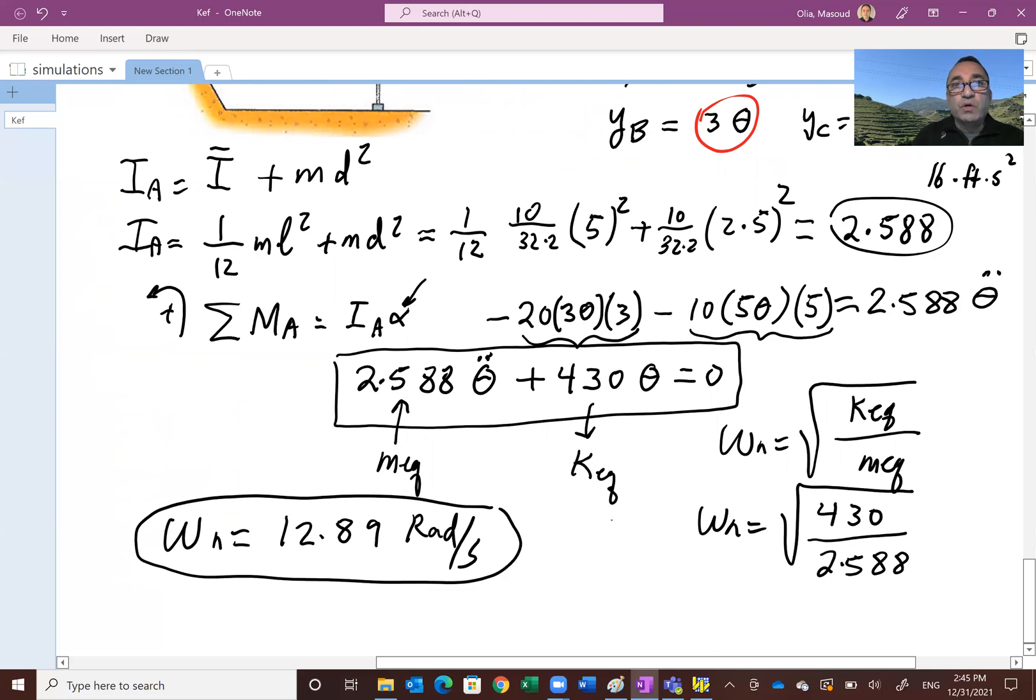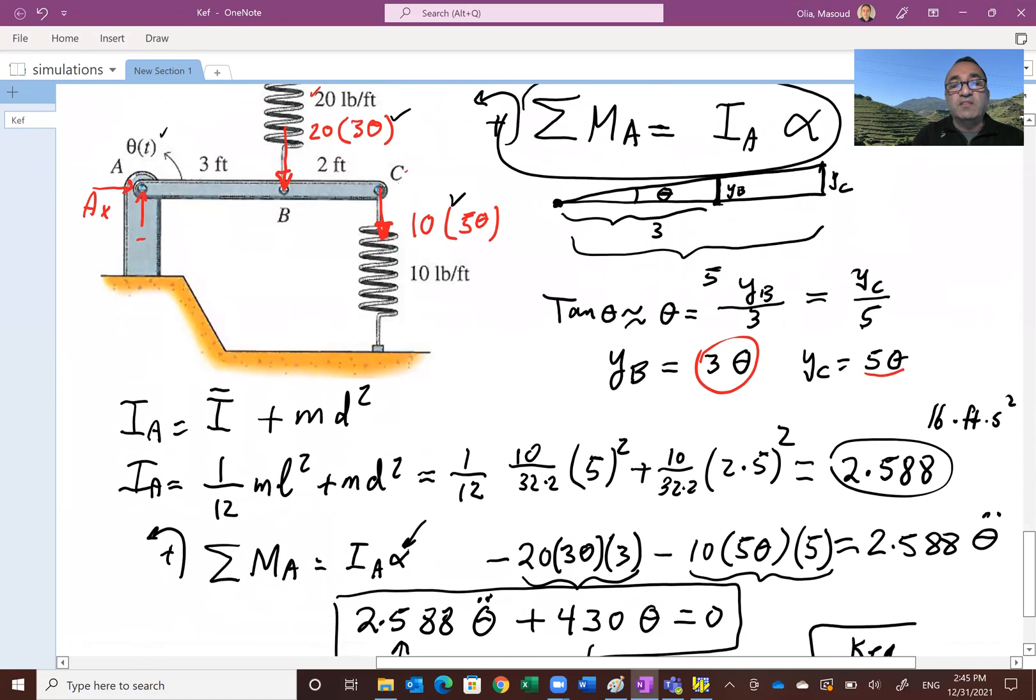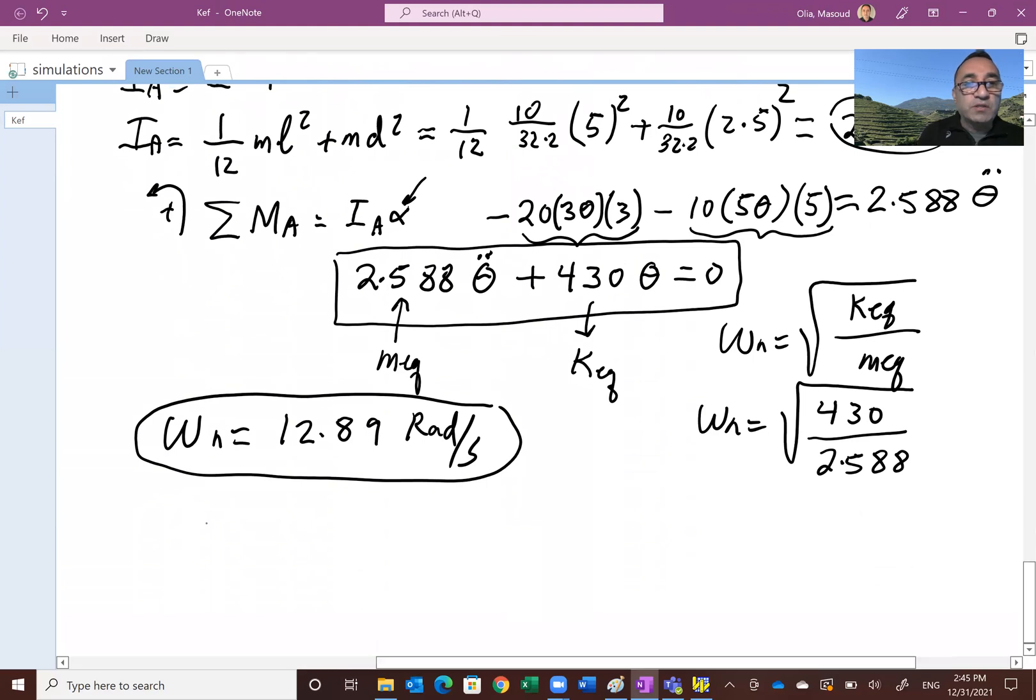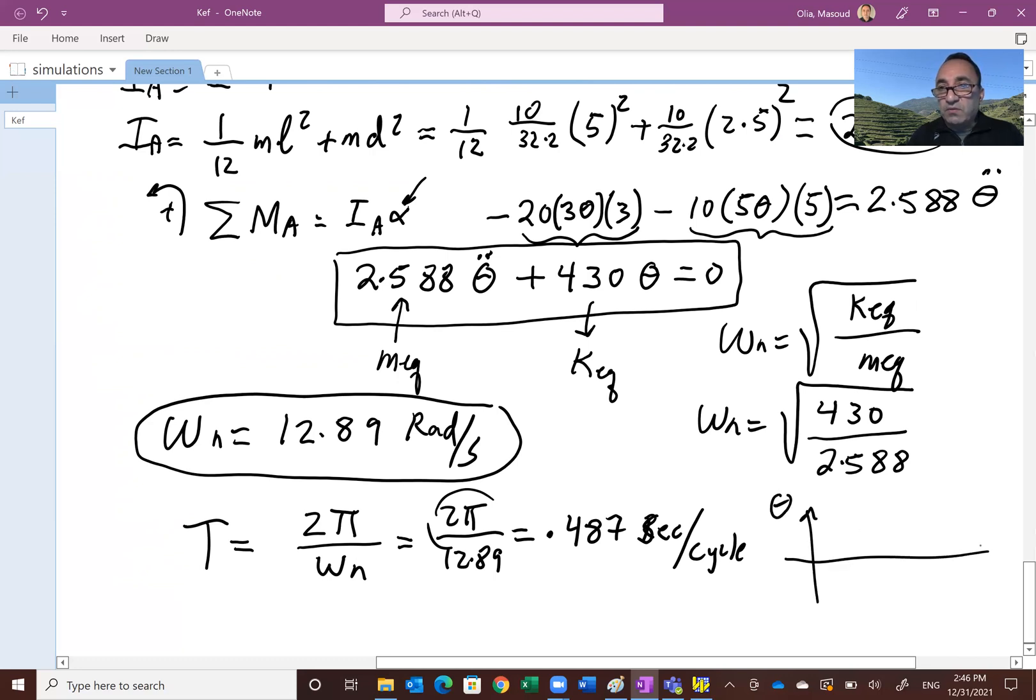If you disturb this and let it oscillate, the system will run at this frequency. If you want to calculate the period, how many seconds does it take to go through one cycle, you do 2π divided by omega. If you take 2π and divide by 12.89, the period would be about half a second, 0.48 seconds per cycle. The 2π converts radians to revolution or cycle. If you plot theta versus time, you would see something like this. The period peak-to-peak is roughly half a second to go through one cycle.